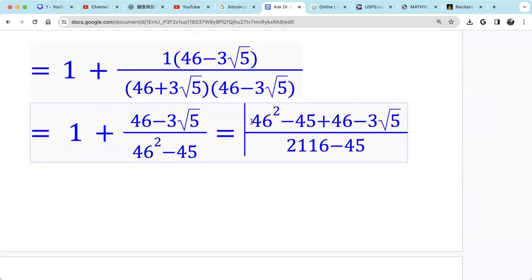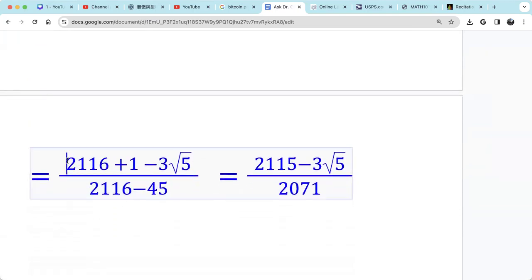So we have 46 squared minus 45 plus 46 minus 3 radical 5 in the numerator. We have the denominator, we have 2116, which is 46 squared minus 45. Then we just do a calculation.